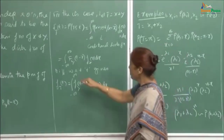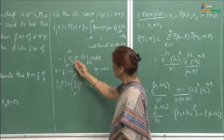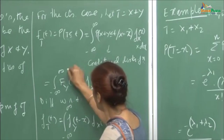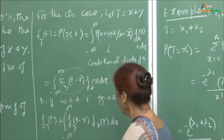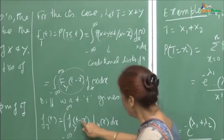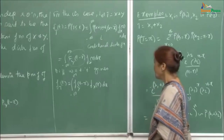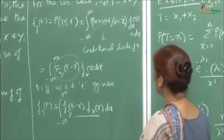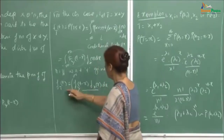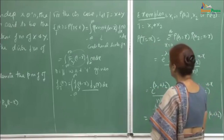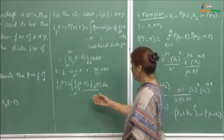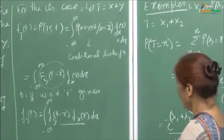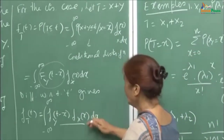Now differentiate with respect to t. Since the limits are independent of t, the differentiation goes inside, giving the PDF f_T(t) equal to the integral from −∞ to ∞ of f_Y(t−x) · f_X(x) dx. This is the convolution formula — you can write it in terms of PDFs. The understanding is that you take values of t and x for which these PDFs are defined. This is the basic definition, and now we will see how to apply it.